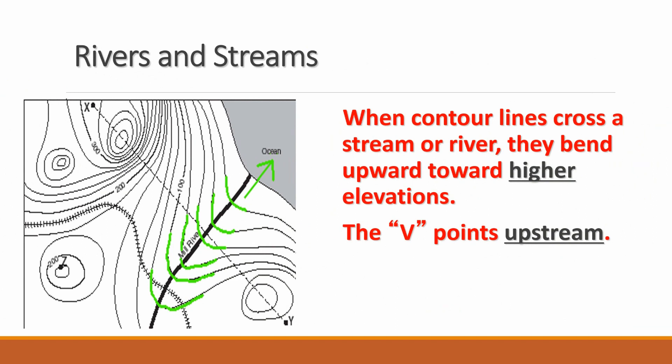The actual shape of the contours can also be useful. For example, in this image that we can see over here, when contour lines cross a stream or a river, they bend towards the higher elevations. So the V point that is generated, that is highlighted in the green marker over here, points upstream. Therefore, we can see that the north-eastern part of this map is where the river is going to be emptying into the ocean, and the south-west part of the map, where the Vs are pointing towards, is going to be upstream.